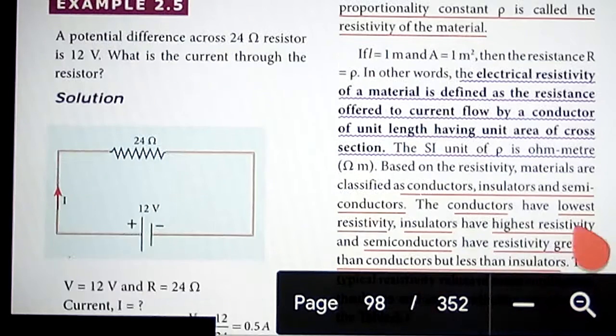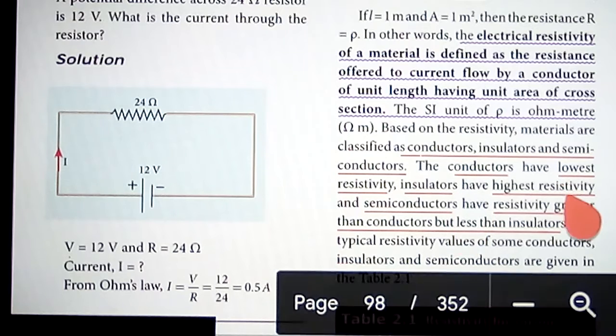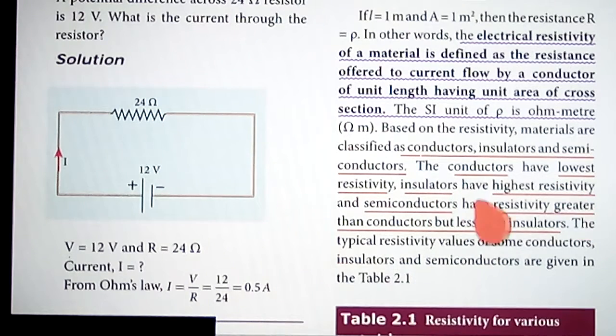The conductors will have the lowest resistivity, insulators have highest resistivity, and semiconductors will have resistivity greater than conductors but less than insulators.